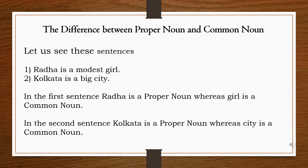The next sentence: 'Kolkata is a big city.' Here, the name of the city is Kolkata — it is a specific name. Whereas the word 'city' would go for any city, so it is a common noun.